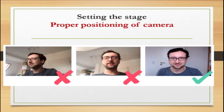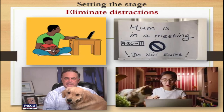Many of us forget to adjust the camera to a proper level, and this sometimes makes us look funny. If the camera is facing upwards you will see the ceiling; if it's downwards you will see the ground. The best way is to have it straightforward. If the laptop is below your level, try putting a thick book under it to get it in the proper position. If you have pets or children, don't forget to put them away to eliminate distractions during your meeting.